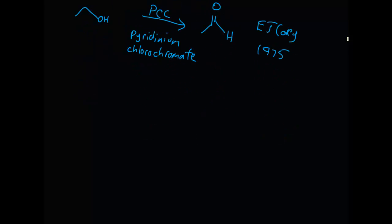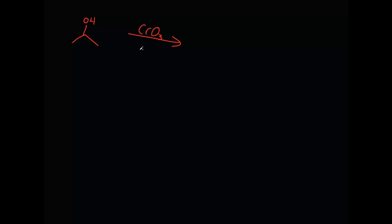That takes us to secondary alcohols. Secondary alcohols are attached to a carbon with just one alpha hydrogen — one hydrogen attached to this carbon, and the other two groups are carbon groups. Secondary alcohols use CrO3, or chromic acid. Since there's only one alpha hydrogen in a secondary alcohol, you're not going to be able to oxidize this to either the aldehyde or the carboxylic acid. Secondary alcohols are always oxidized to ketones, because there's still a carbon group on the other side. The furthest you can go in oxidation in this case is just the ketone.